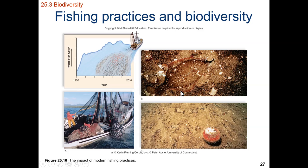The flounder fish is a commonly harvested fish consumed at grocery stores and restaurants. It has two eyes on top and lies flat on the seafloor. To harvest flounder, you need to drag a net across the bottom of the ocean and disrupt a wide swath of the seabed.